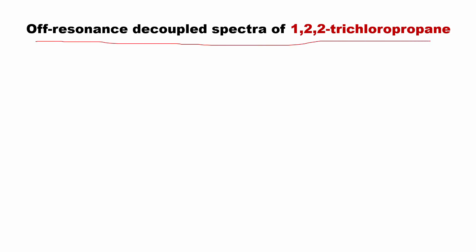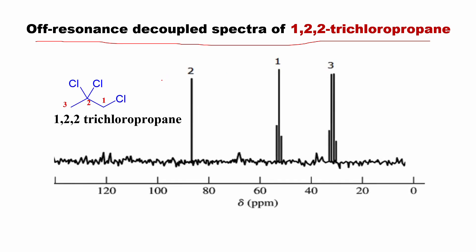Another important example of an off-resonance decoupled spectrum is the spectrum of 1,2,2-trichloropropane. There are three types of carbon atoms, denoted as 1, 2, and 3. Carbon atom 1 is a CH₂ group, directly attached to two hydrogen atoms, so it couples with those hydrogens to give a triplet. Carbon atom 2 is a quaternary carbon atom with no hydrogen directly attached, so it gives only a singlet. Carbon atom 3 is a CH₃ group, with carbon directly attached to three hydrogen atoms, so the carbon signal splits into a quartet — you can see the quartet of the third carbon atom here.